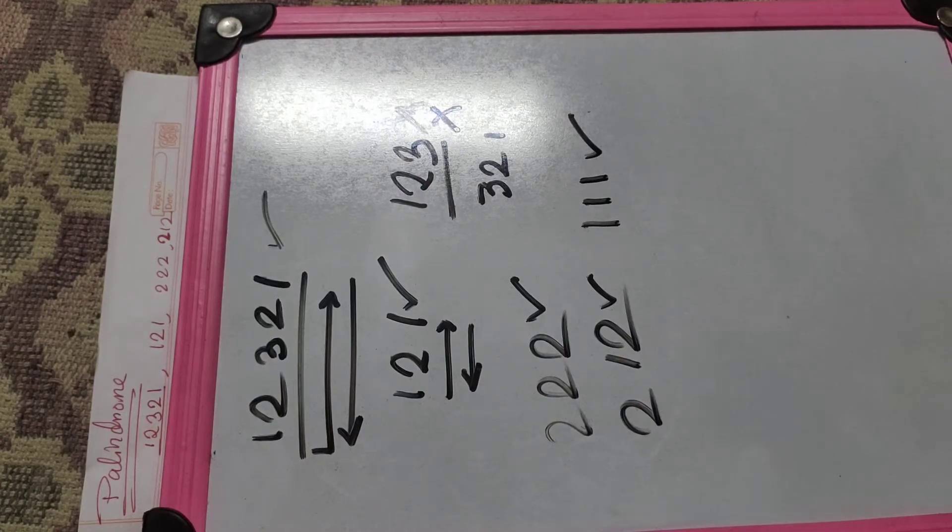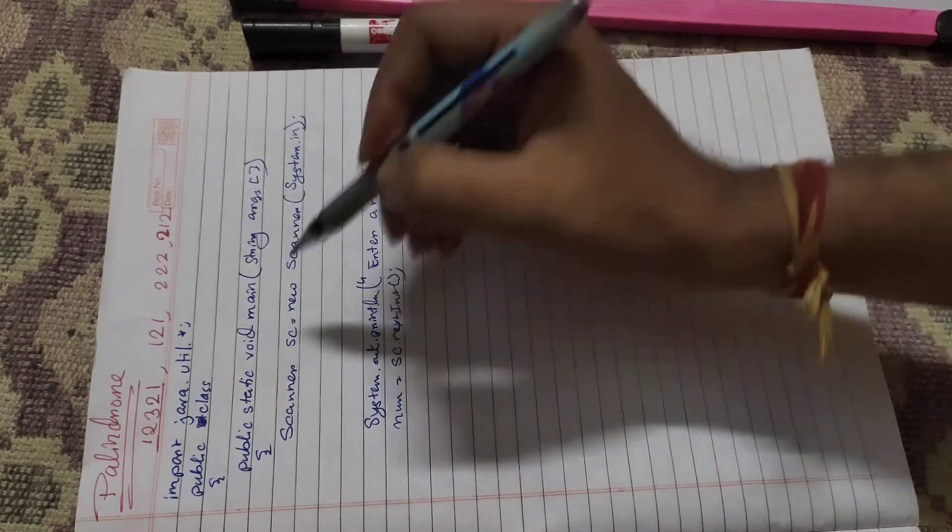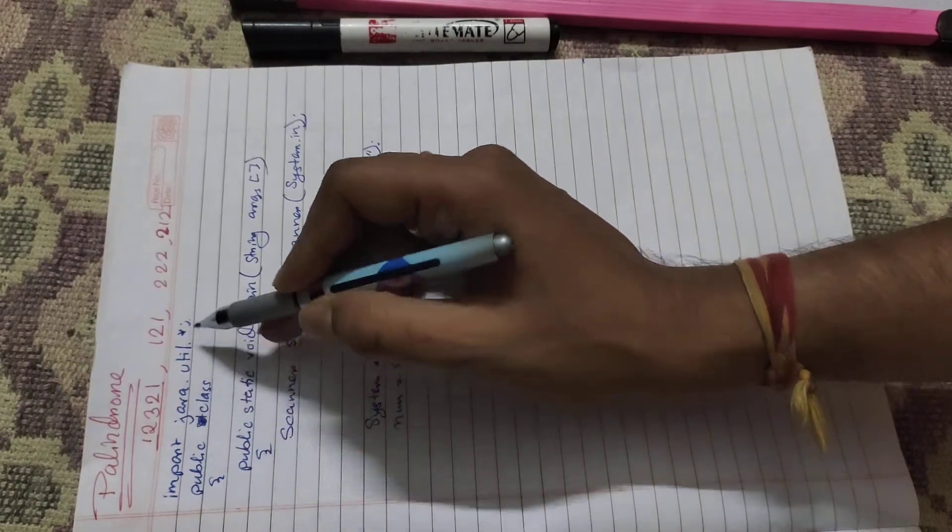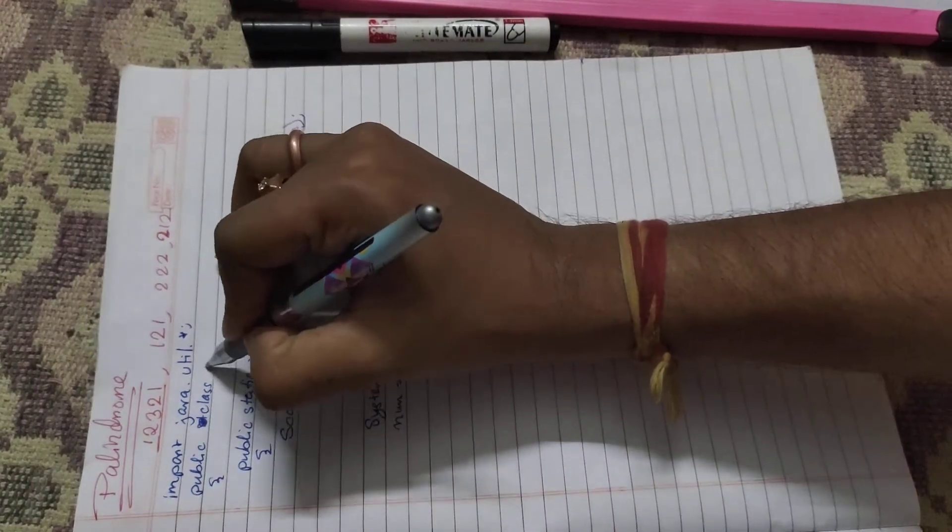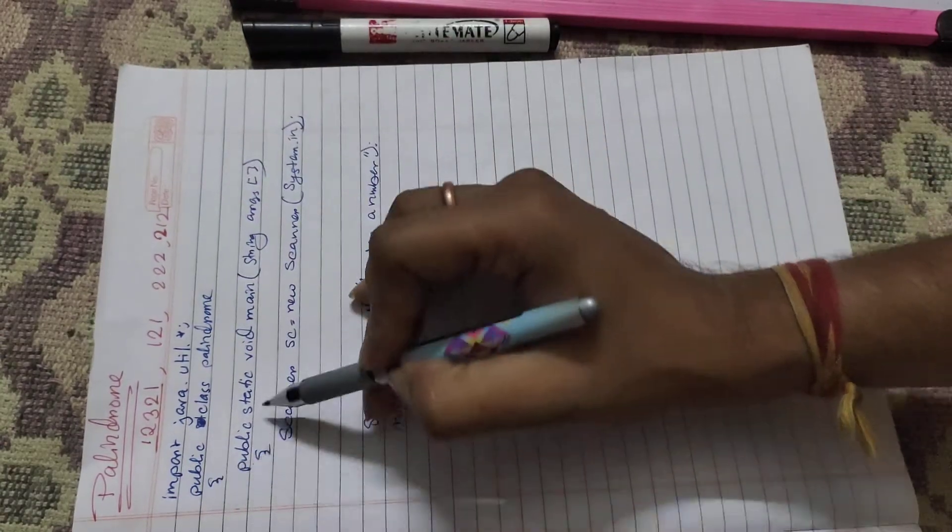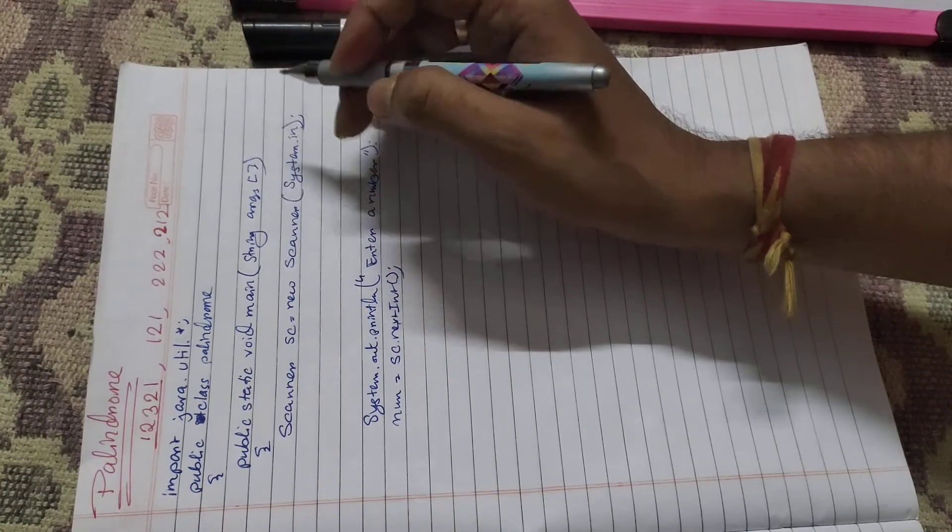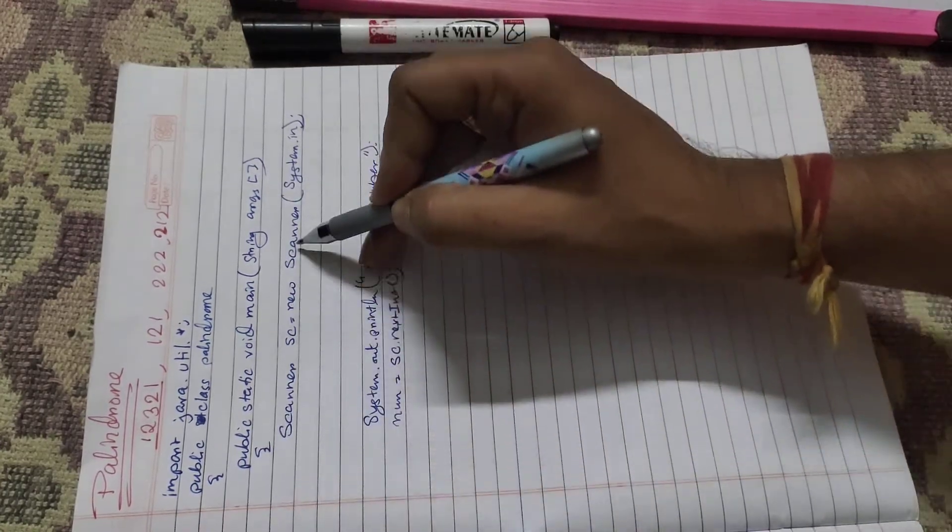I've already written the code. Import java.util.star, public class Palindrome, next public void main, first bracket String args, third bracket, open close first bracket, close curly braces.